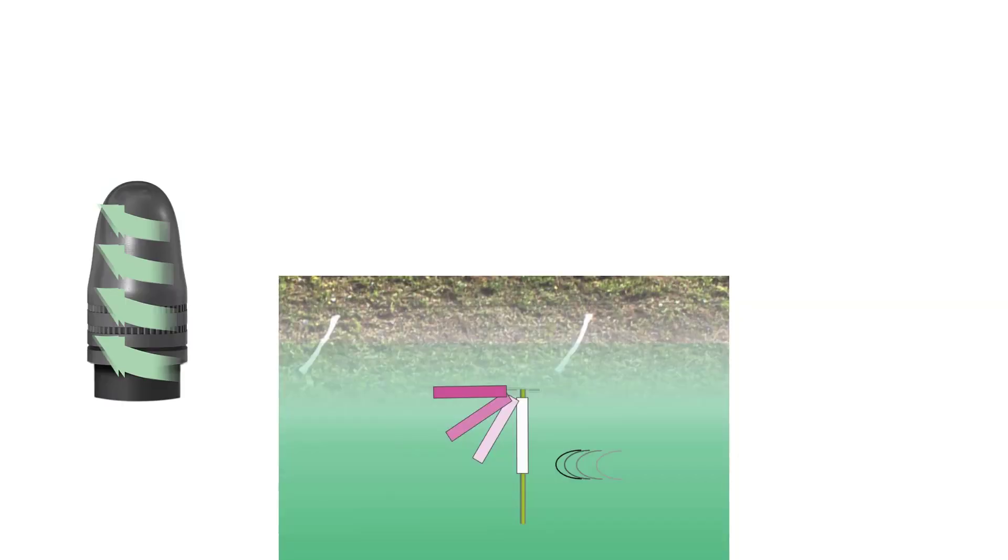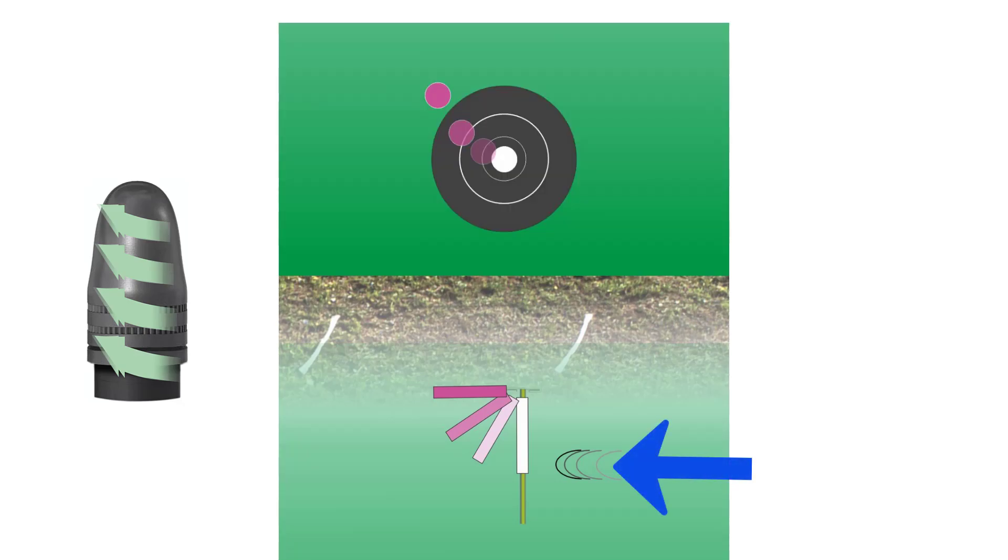Thus, the velocity of the bullet increases with the wind from the right. The shot is additionally deflected upwards.